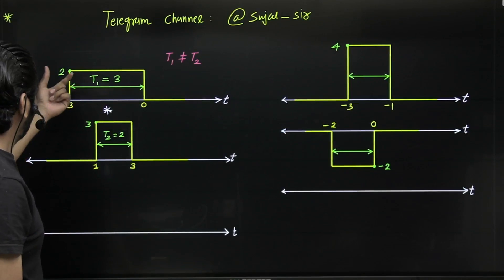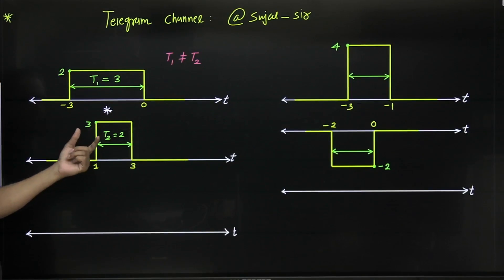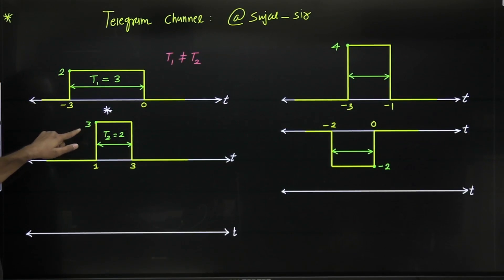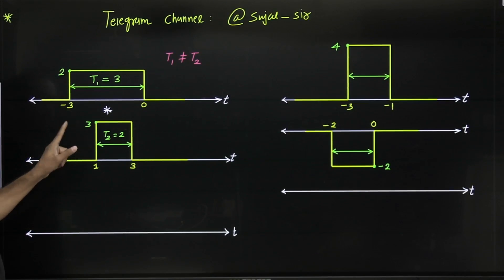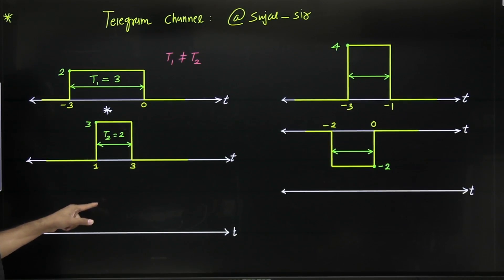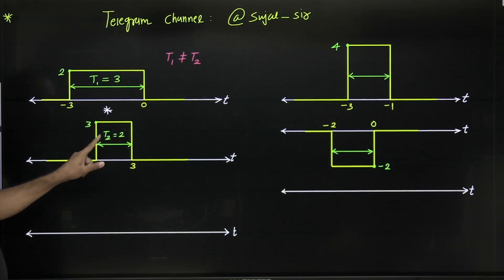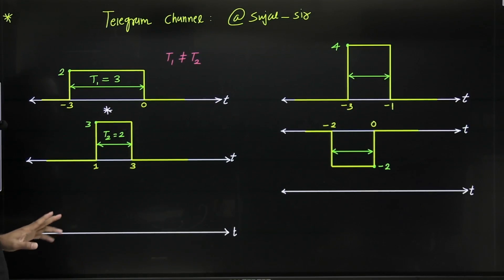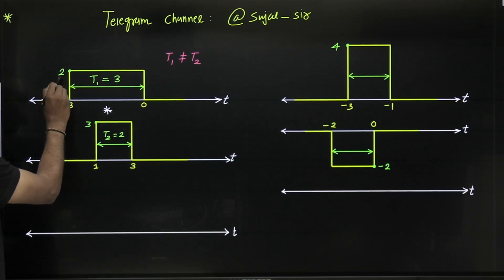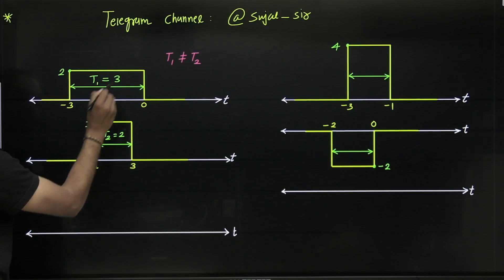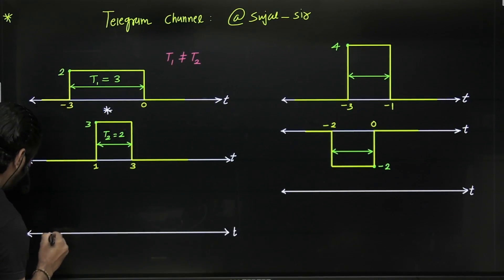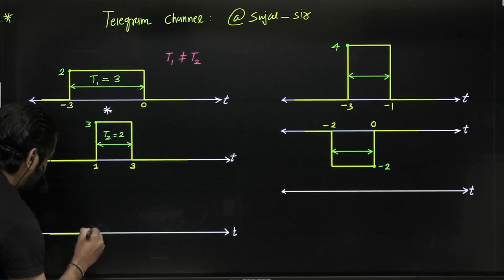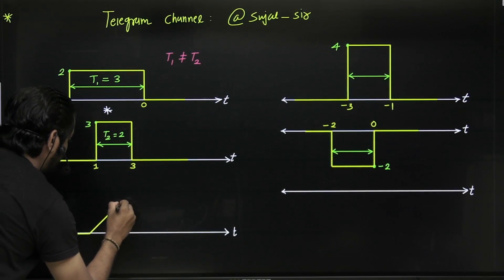You have to observe the amplitude of both signals. Here amplitude is plus 2, here plus 3. The resultant signal will have positive amplitude if both are positive. If both are negative, the resultant is also positive. If one is positive and one is negative, the resultant will have negative amplitude. Here both are positive, so the resultant is trapezoidal with positive amplitude.